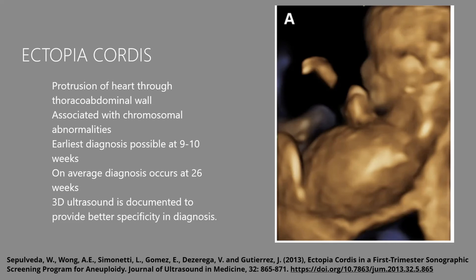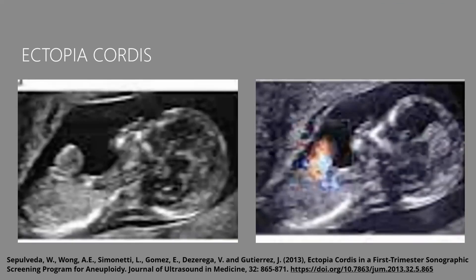Color Doppler imaging is also used to visualize the heart, confirming it is functional and has blood flowing through it. This helps differentiate the protruding heart from other structures such as intestines, which might be seen in conditions like gastroschisis, ensuring proper diagnosis.